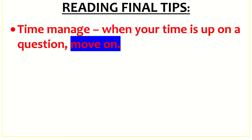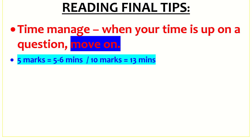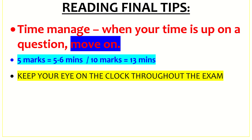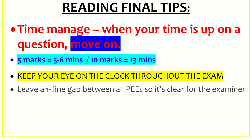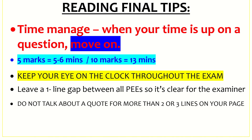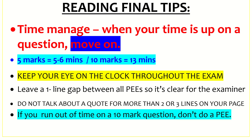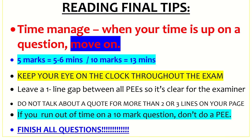Final tips for the reading: time manage — when your time is up on a question, move on. Five marks: five or six minutes. Ten marks: 13 to 15 minutes. Keep your eye on the clock throughout the exam. Leave a one-line gap between all your answers. Do not talk about a quote for more than two or three lines — get on to the next quote as soon as you can. If you run out of time on a ten-mark question, don't do a full PEE — just find a simple quote and finish all questions.